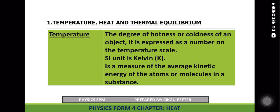As we start, we can look at the first part: the definition for temperature. Temperature is the degree of hotness or coldness. The common measuring instrument we use to measure temperature is a thermometer. When we measure human body temperature, it shows 37 degrees Celsius, showing the degree of hotness of the human body.